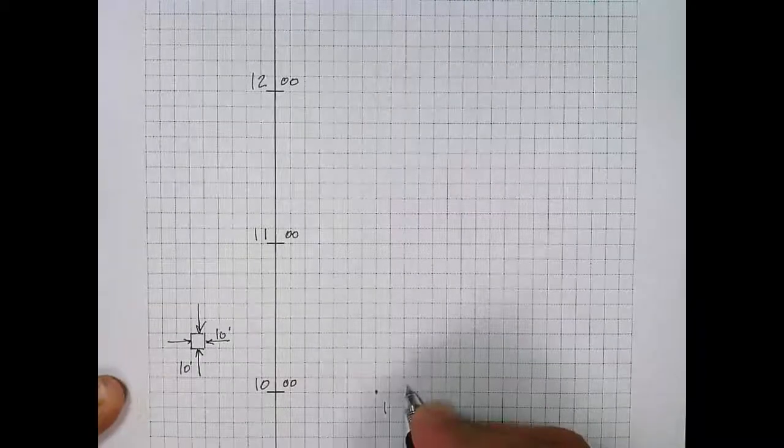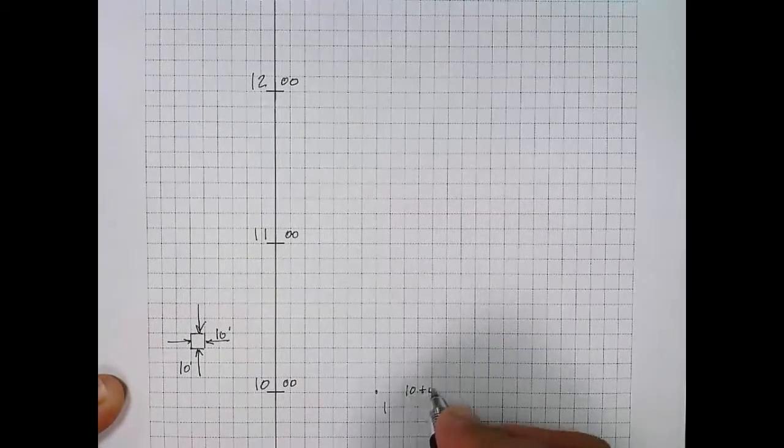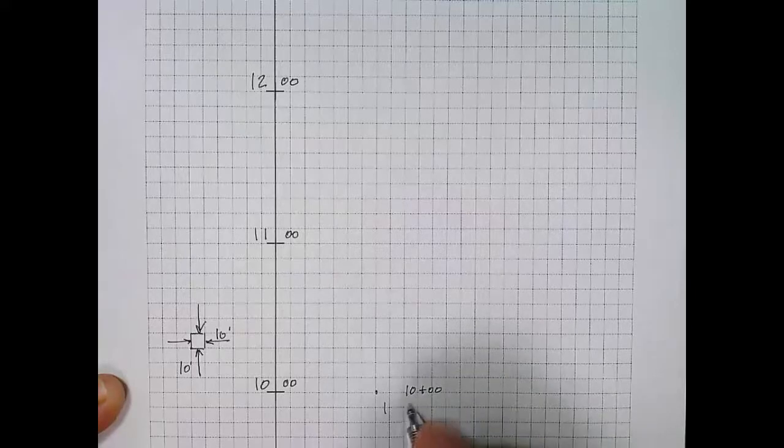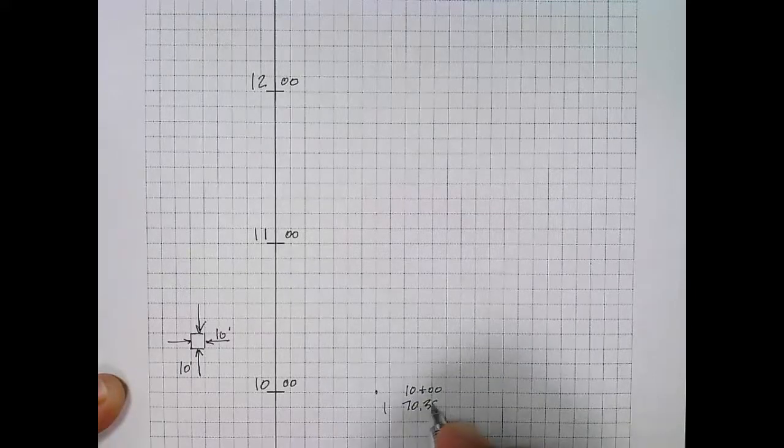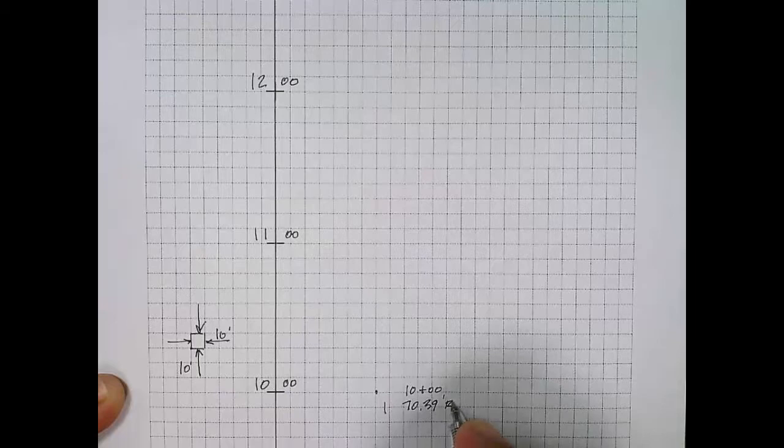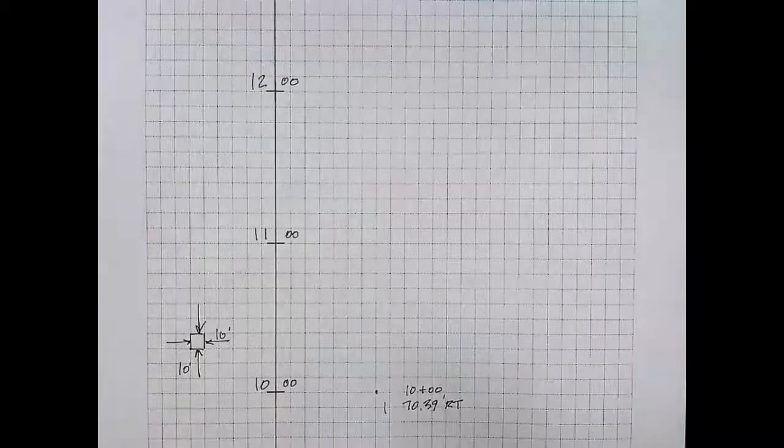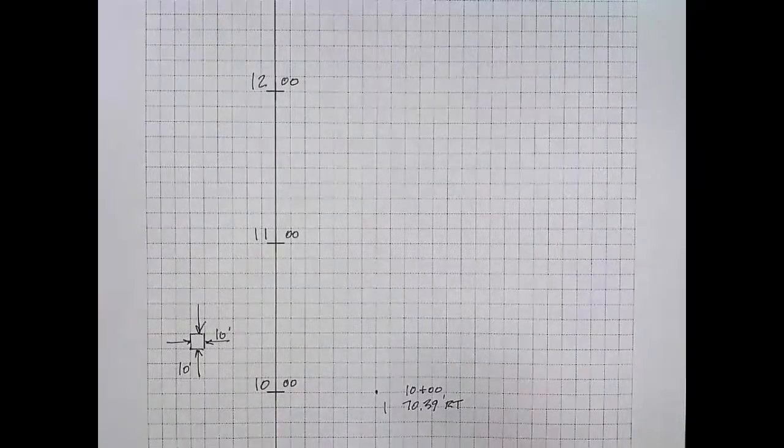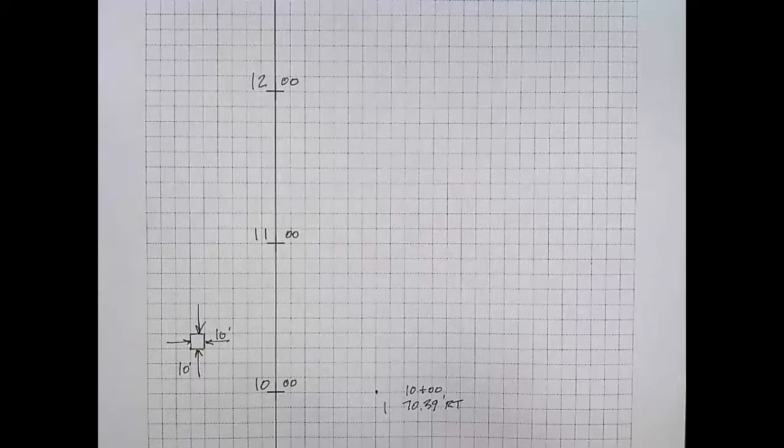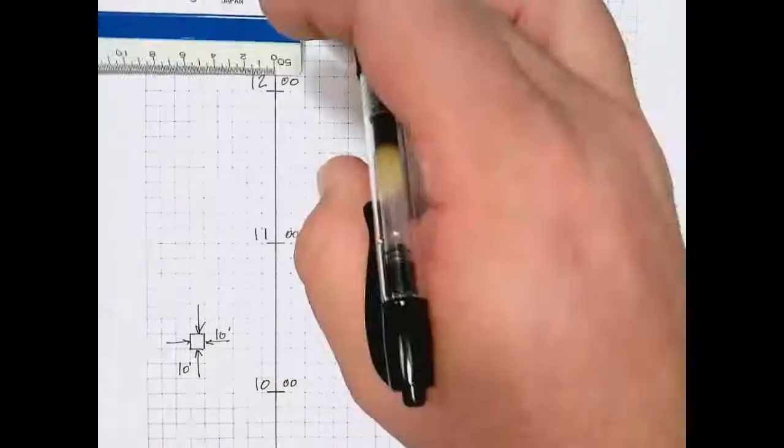Our very first point, point one, is at station 10 plus 00 with an offset of 70.39 feet right. Here you can see the format with which we label that: station 10 plus 00 and 70.39 feet right. That's our first point.